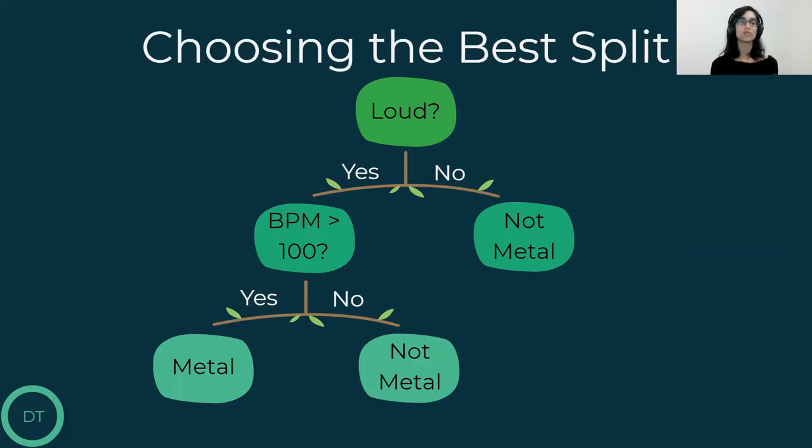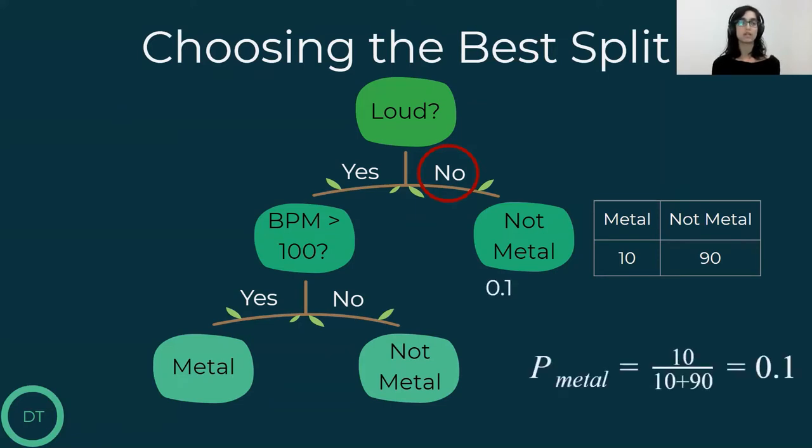So at each point, we want to find the best split for the tree. What does it mean the best? The one with the lowest impurity. A leaf is called pure if the samples that reach it are all from the same class. For example, if we look at all the songs that are not loud, we have 10 metal songs and 19 non-metal songs. So the probability of a song that reaches that leaf to be a metal song is 0.1. And the probability of the song that reaches that leaf to not be a metal song is 0.9. And we can add these probabilities to every leaf node.